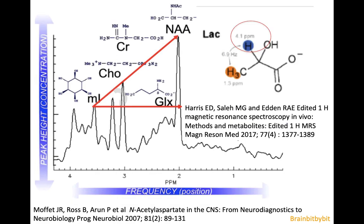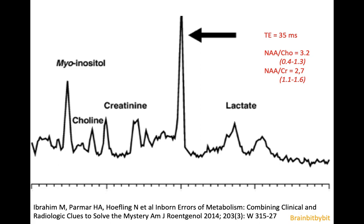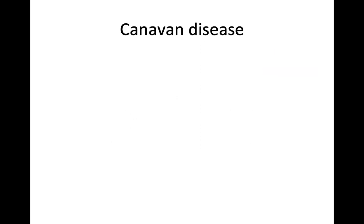For those who paid close attention: I mentioned lactate is a double peak, but the proton is actually in three different groups. However, the 4.1 parts per million lactate peak gets suppressed during water suppression on the left side of the x-axis. Almost all diseases show high choline and low NAA. There is only one disease that has high NAA, and that's Canavan disease — which we are going to look at next time. Thank you.